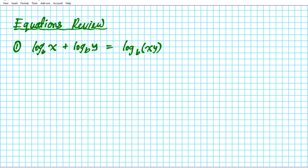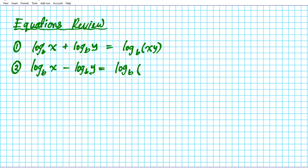This applies as long as your bases are identical and you do not have any coefficients. For the difference property: if you have log base B of X minus log base B of Y, we get the inverse of multiplication, which is division. So it becomes log base B of X divided by Y. This is the quotient property of logarithms.